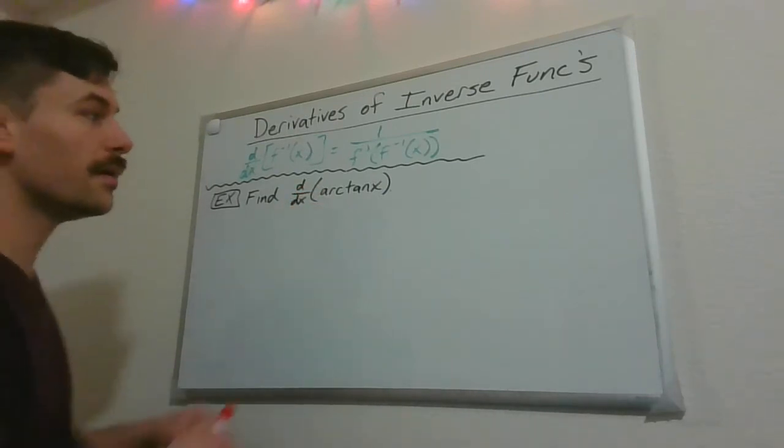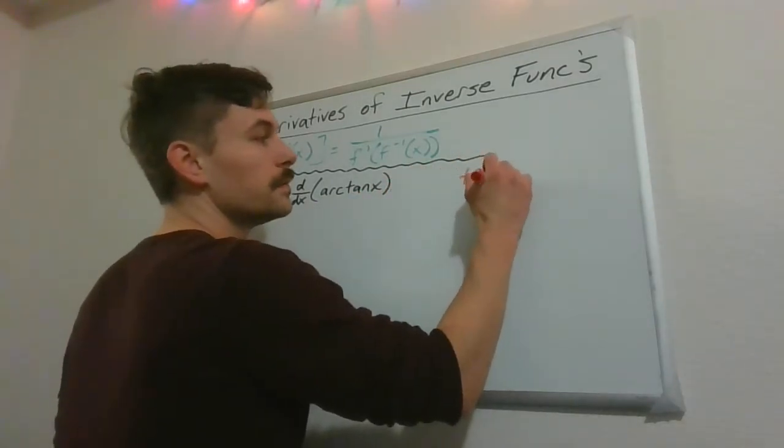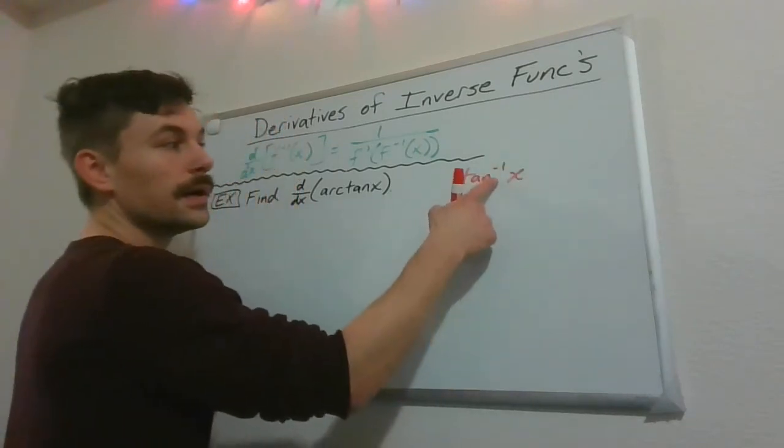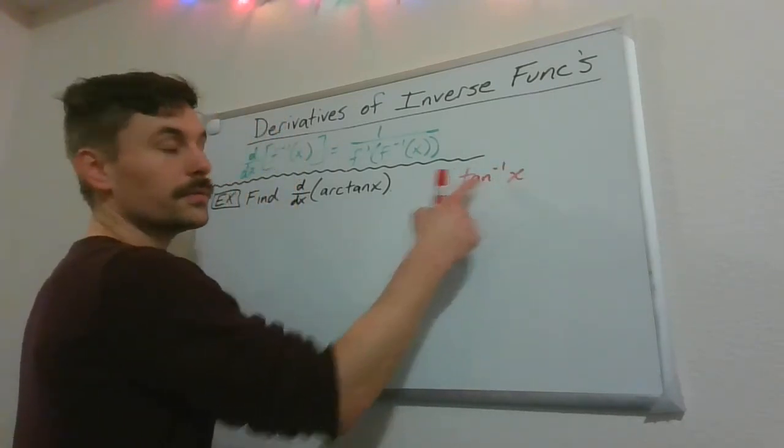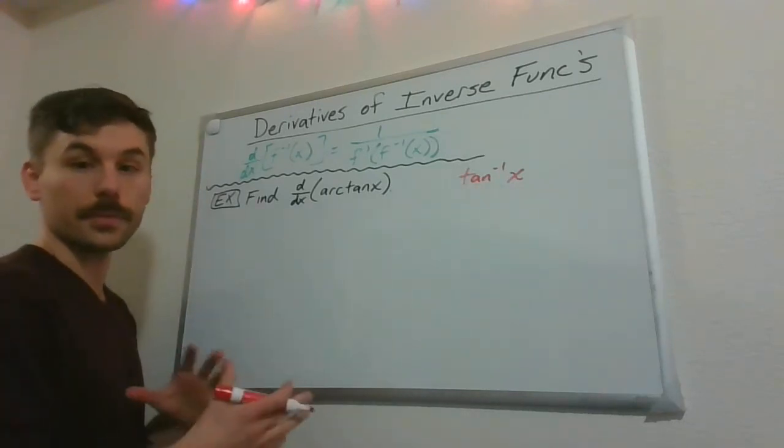Remember that arctan of x, this is another way of writing this, is tan inverse like this. But generally we use this arctan notation so that we don't confuse ourselves with the reciprocal.